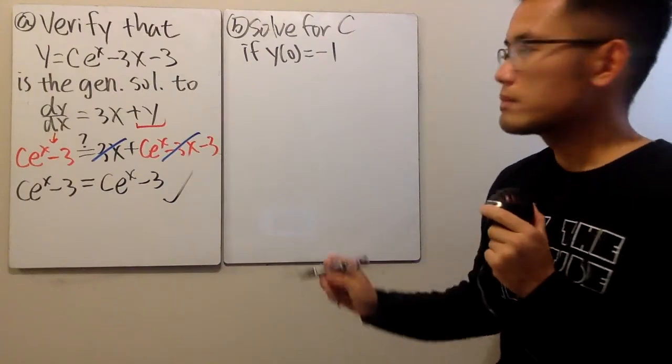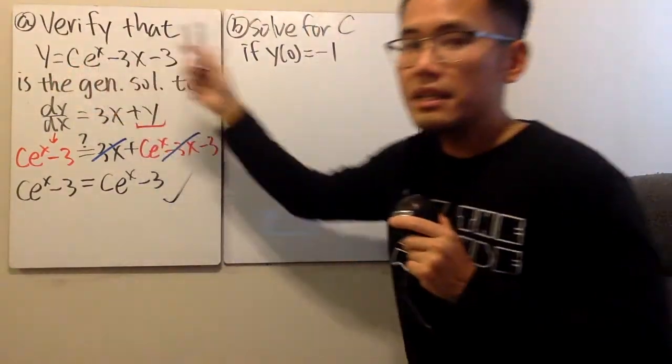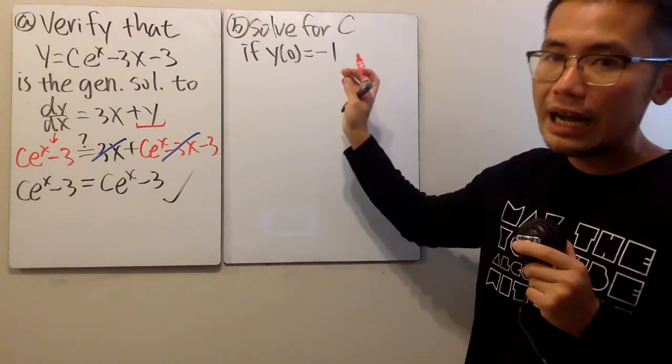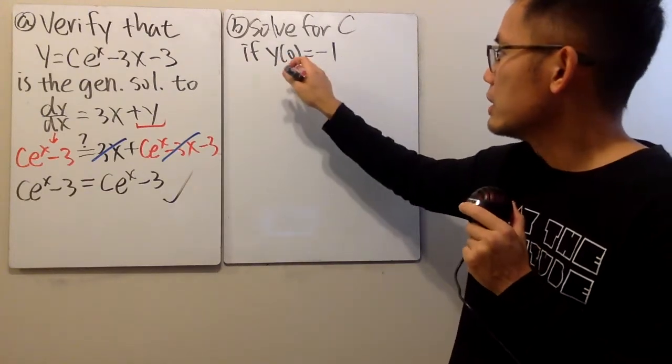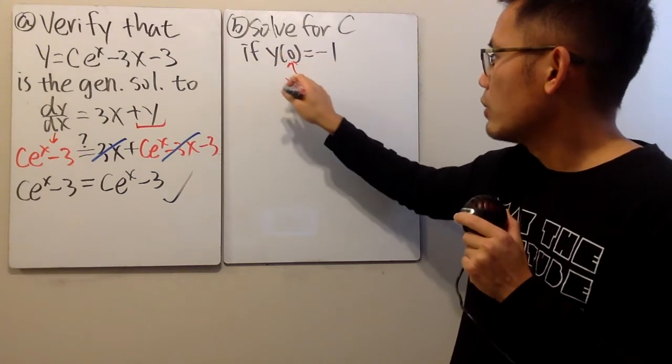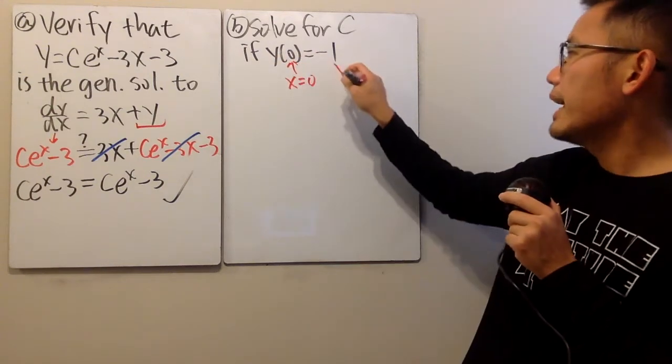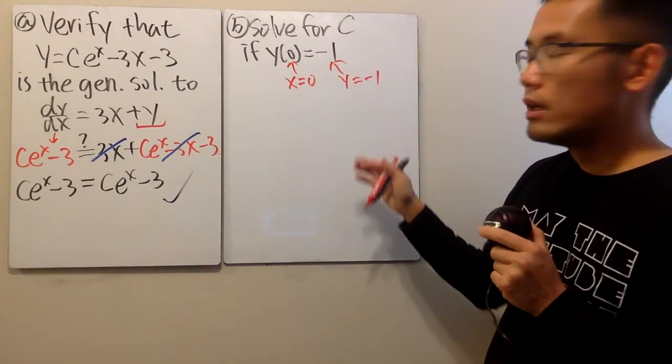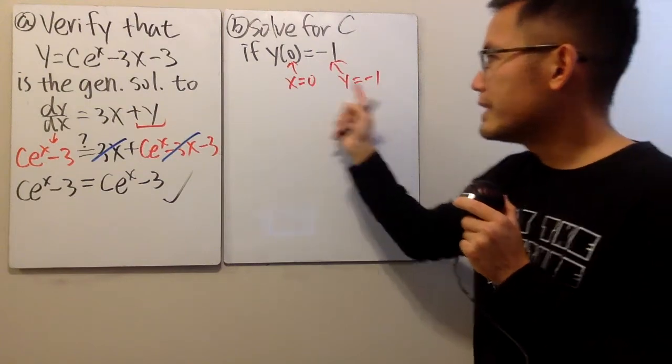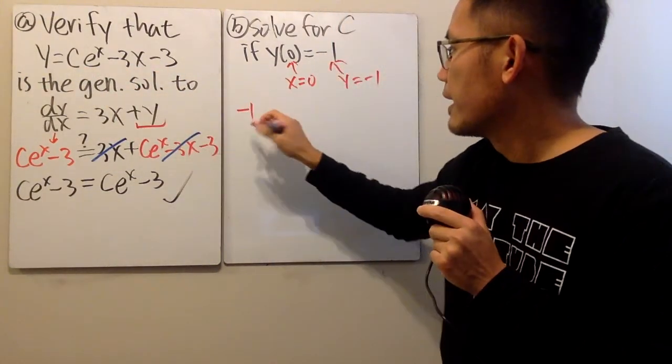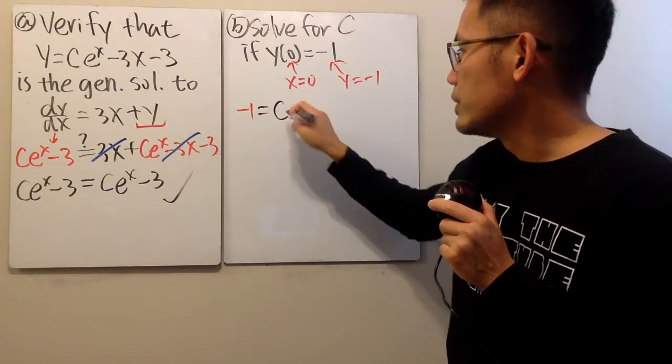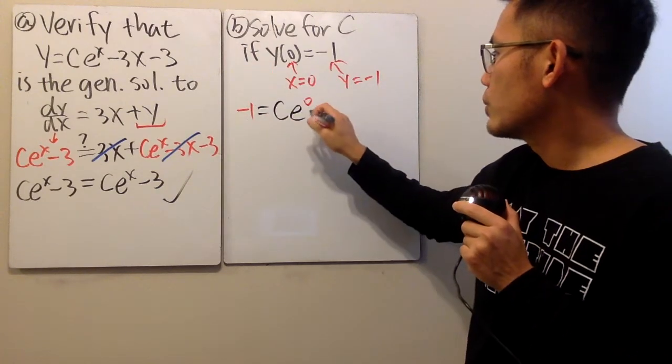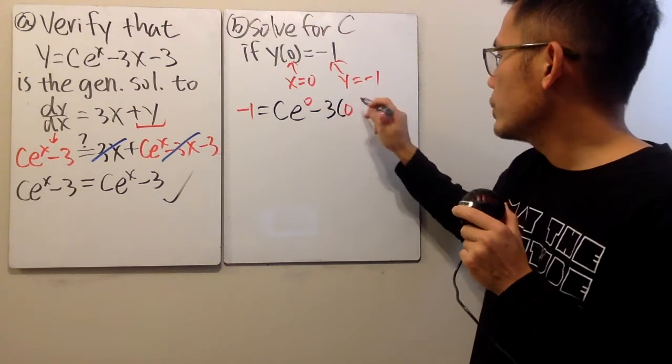Now, to solve for this, we already know that y is equal to that. And here's the deal. Whenever you have this notation, this means y of 0, that tells us x is equal to 0. And in the meantime, y will be negative 1. So now we just have to do some algebra, put the negative 1 into the y. And then we have the c, which we don't know yet. And the x is 0. So let's just go ahead and plug in. So this is all we have to do.